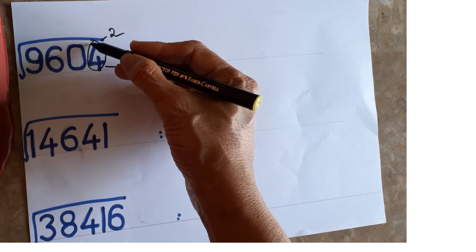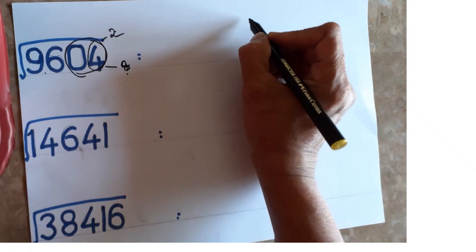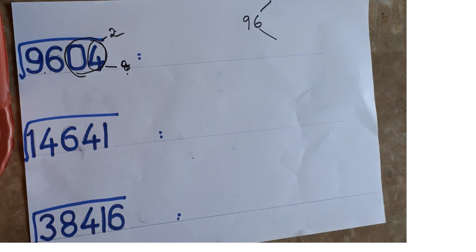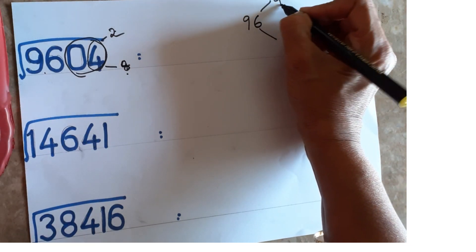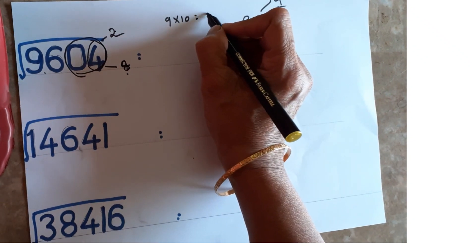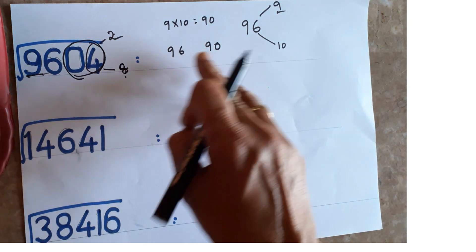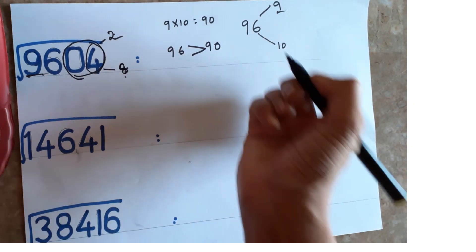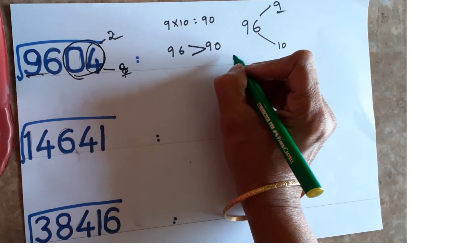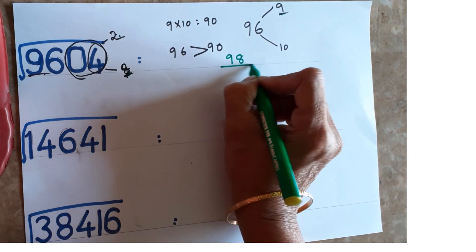Square root of 9604: units place is 4, so you will get 2 or 8. Eliminate two digits — remaining is 96. Nearest square roots: nine nines are 81, ten tens are 100. Multiply 9 times 10 = 90. Base number is 96. Is 90 less than or greater than 96? It is less than 96 — greater means take the next number. So take 9 as first digit and 8 as units digit. Answer is 98.